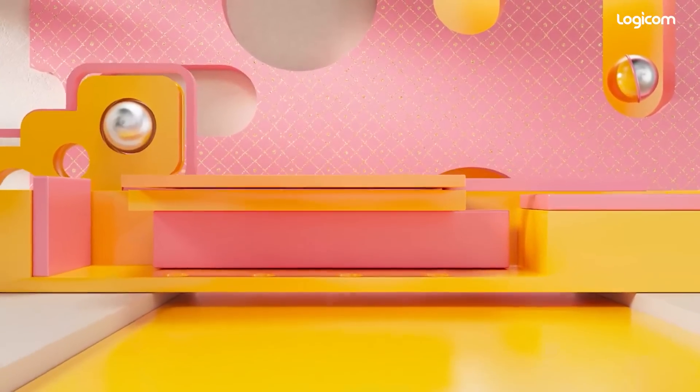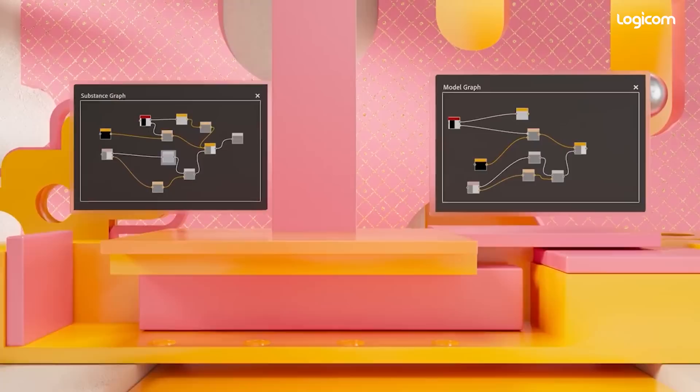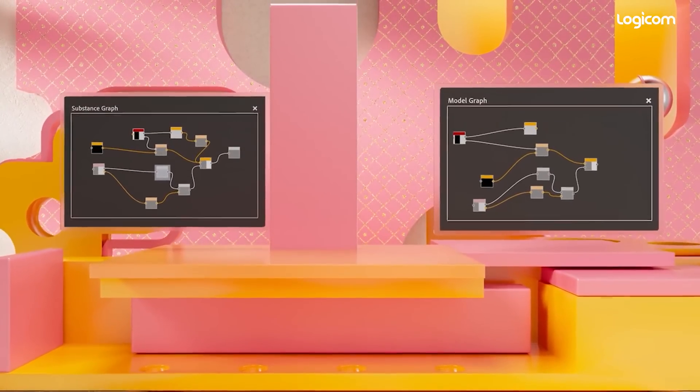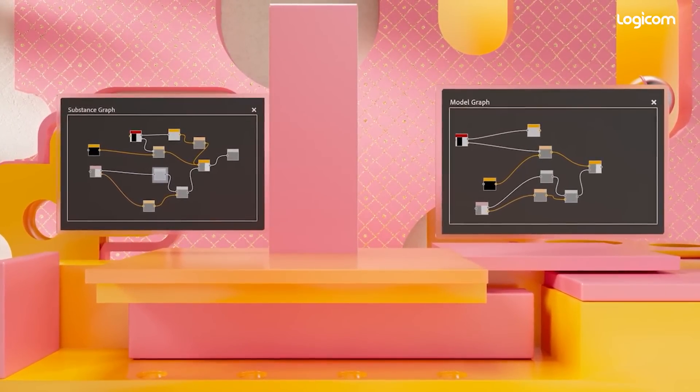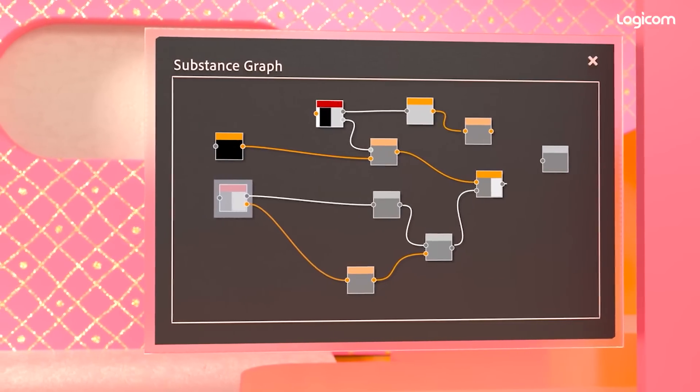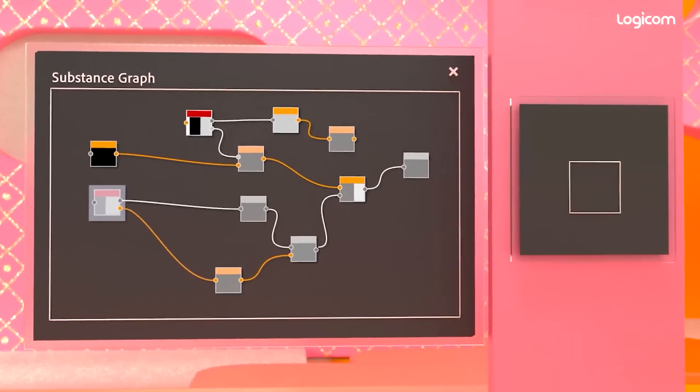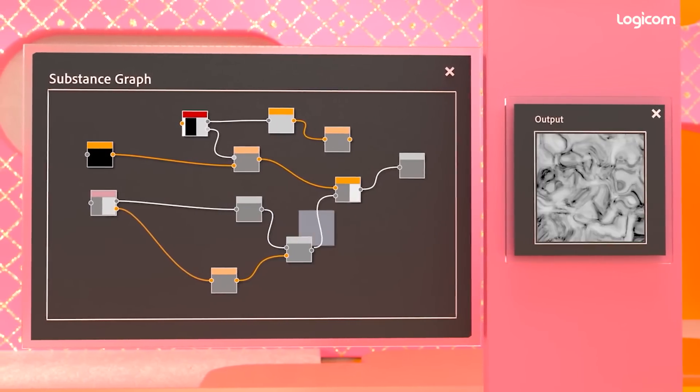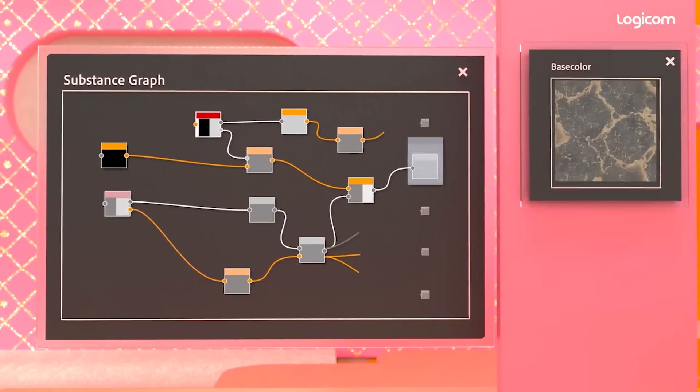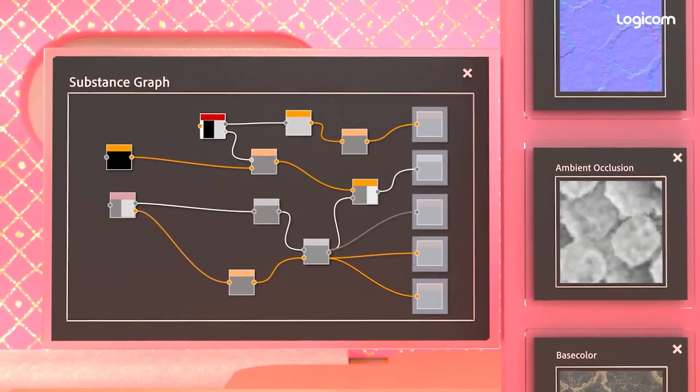Substance 3D Designer lets you build a few different types of graphs, each intended for a different kind of resource. The most common graph type is the Substance Graph, where nodes process and create 2D texture outputs that can be anything from grayscale patterns and shapes to complex realistic materials.